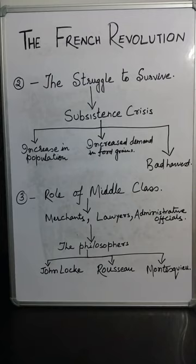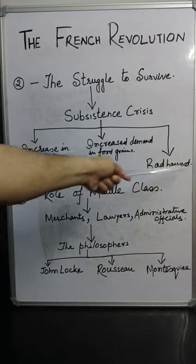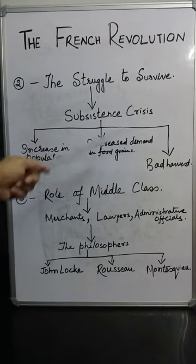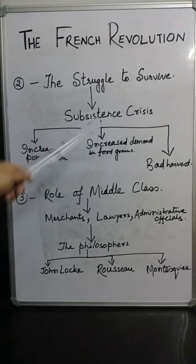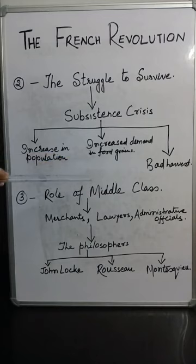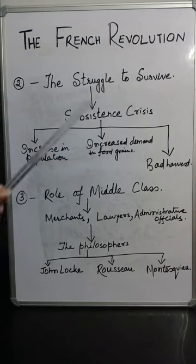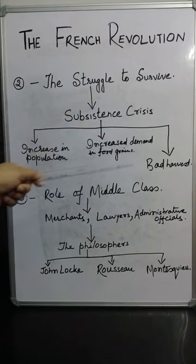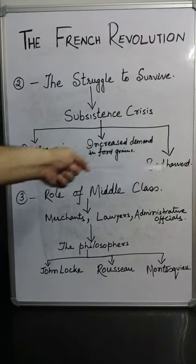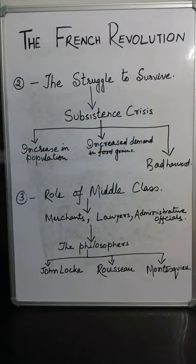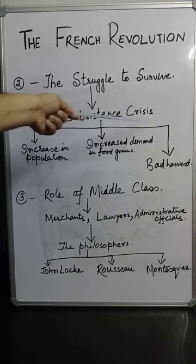Moreover, during this period there was a bad harvest. The reasons for this bad harvest were sometimes hail and sometimes drought. This was not a result of a single year's situation — continuously for several years, 1787, 1788, and 1789, there was either hail or drought. This condition was responsible for bad harvest, which resulted in excessive food grain shortages and contributed to the subsistence crisis.